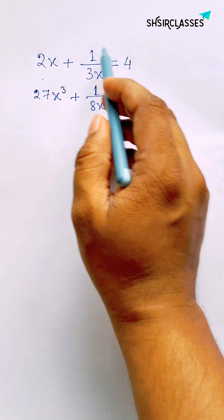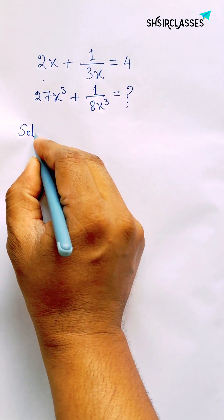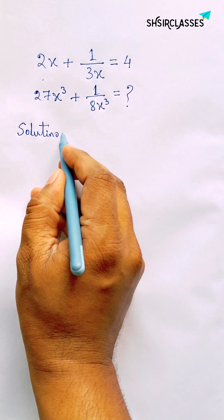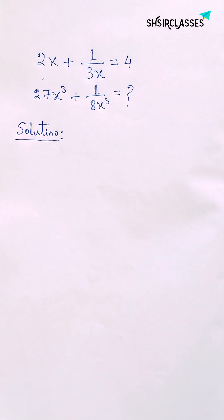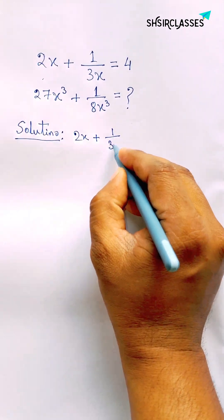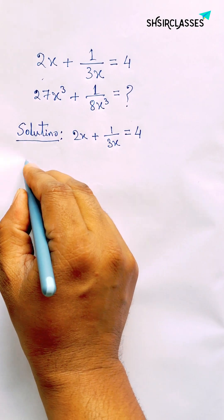Hello friends, today solving this. Here given 2x plus 1 by 3x equals 4, and we have to find 27x cube plus 1 by 8x cube equals what?